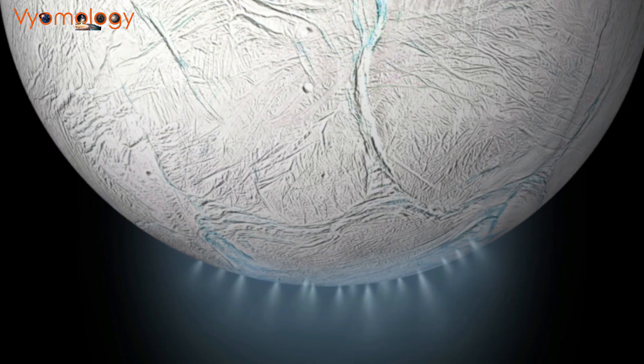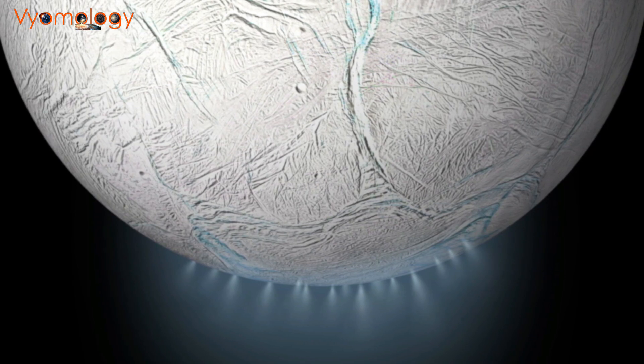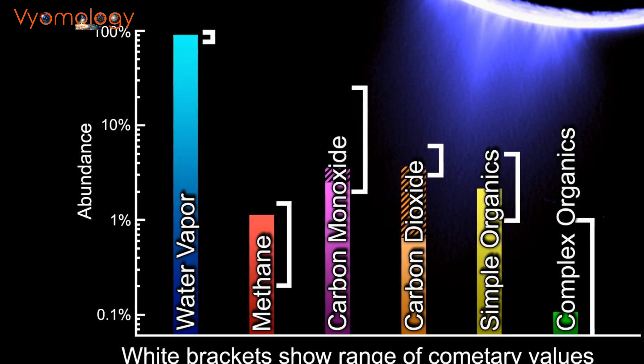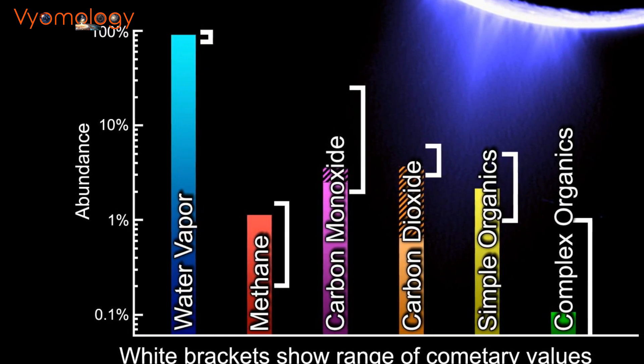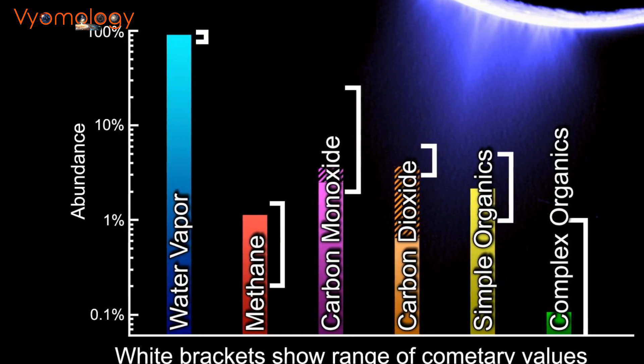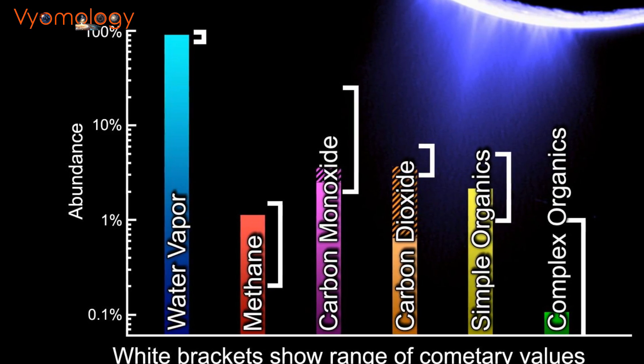During its mission, Cassini detected geysers spouting through Enceladus' icy shell. The cosmic dust analyzer revealed a mix of chemicals: carbon dioxide, water vapor, carbon monoxide, nitrogen, hydrocarbons, and complex organics.